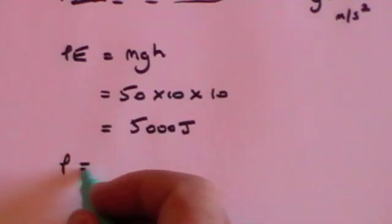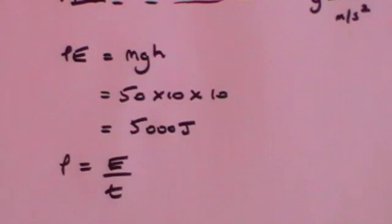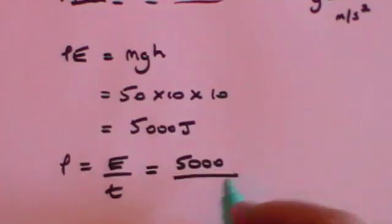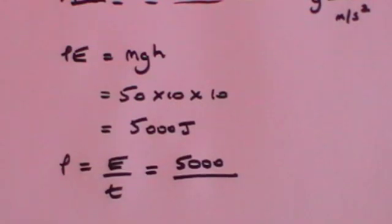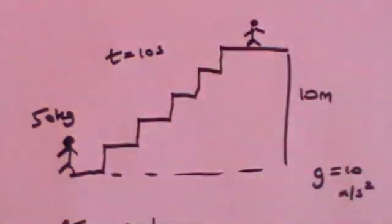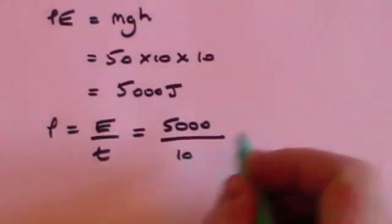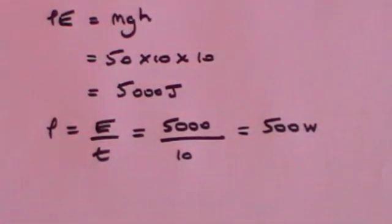What is power? Power is energy divided by time, and that's going to be 5,000 joules divided by time. I think I told you it takes 10 seconds to climb the stairs, so T is 10 seconds, and so now we've got energy divided by time, 5,000 divided by 10 is 500 watts. So we use 500 watts of power to climb the stairs.